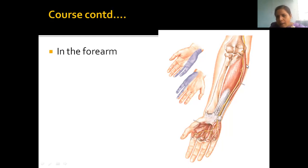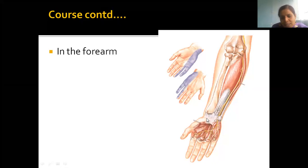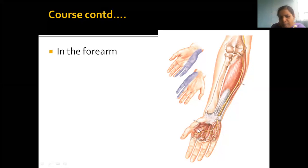After passing behind the medial epicondyle, the ulnar nerve successfully enters the forearm. The two muscles seen here are flexor carpi ulnaris — the thin one — and flexor digitorum profundus. The nerve runs between these two muscles, supplying them. Then at the wrist we have the flexor retinaculum, and the nerve goes deep to that structure to enter the palm.